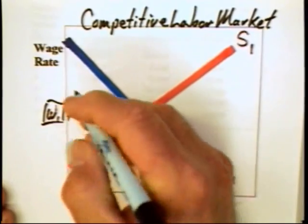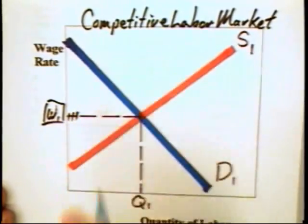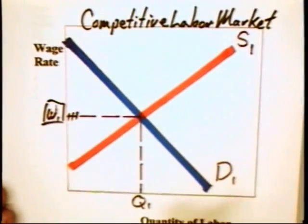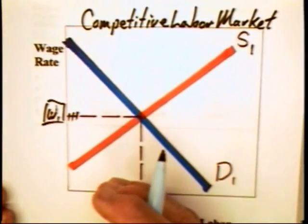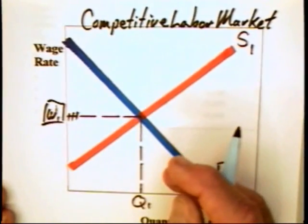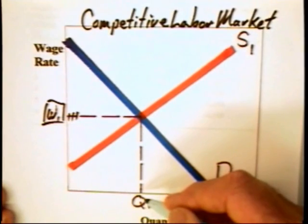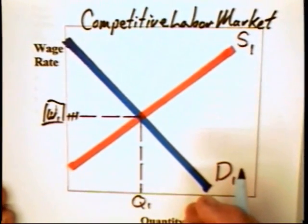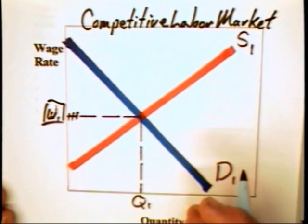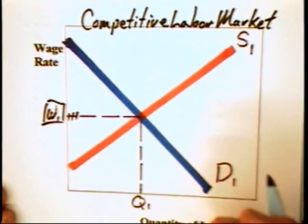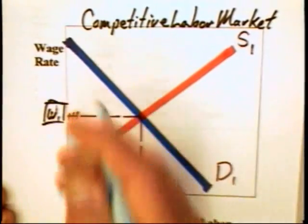Each employer can figure that it can hire one worker, two workers, three workers, four, whatever, and still not materially affect the wage rate. Because there are so many employers in the market, and these employers are all very small relative to the overall quantity of workers being hired. As a consequence, each employer is a proverbial drop in the bucket. The employer can raise its demand for workers, increase the number of people it hires, but that will not materially affect the wage rate.